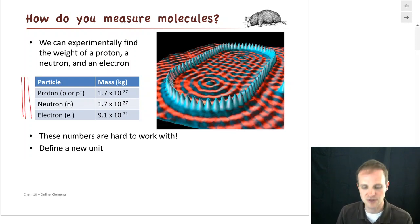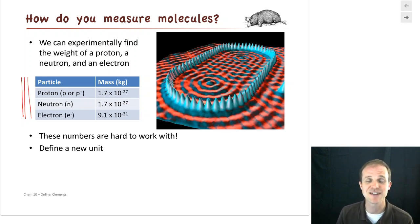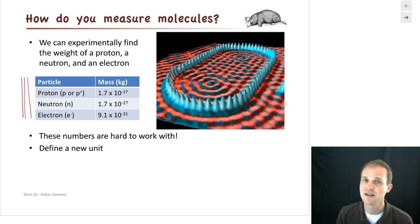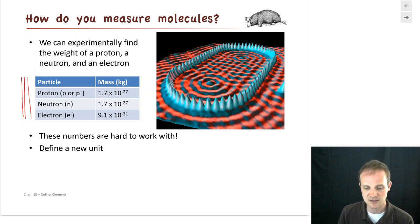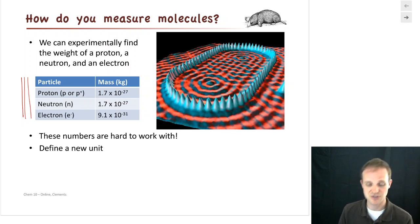In this little table we see that a proton weighs 1.7 times 10 to the minus 27 kilograms. Well, that's a tiny, tiny, tiny number — 10 to the minus 27th is like 26 zeros in front of that one. Totally really small. A neutron, we said, is about the same size as a proton. And an electron is about 1,000 times smaller — it's 10 to the minus 31st in mass.